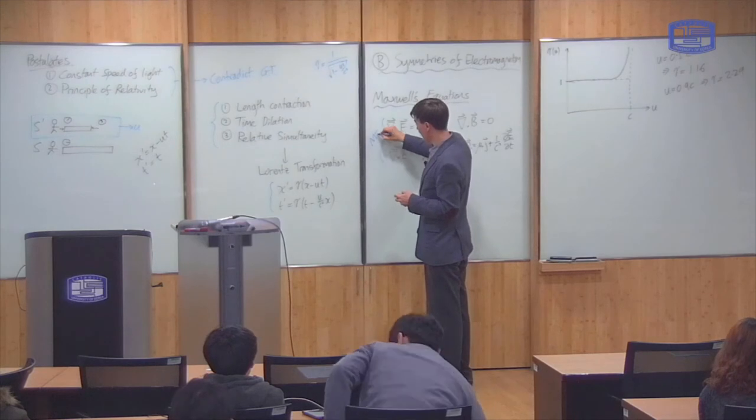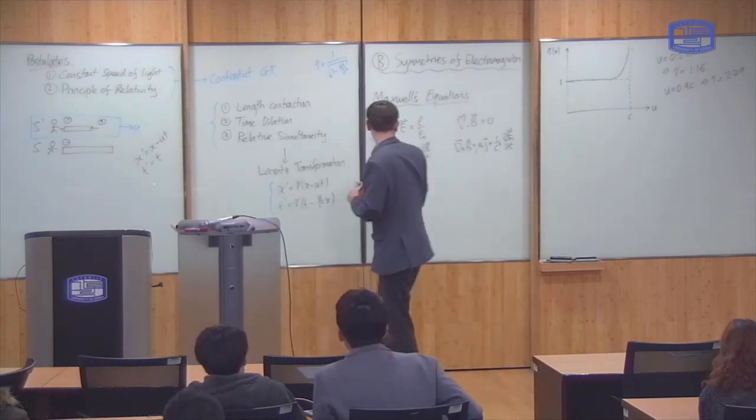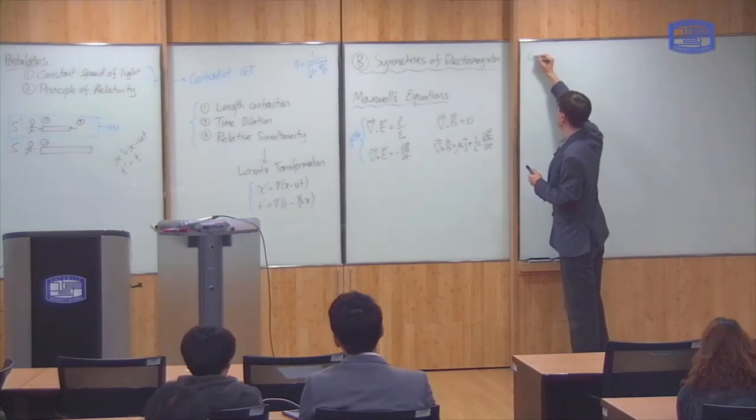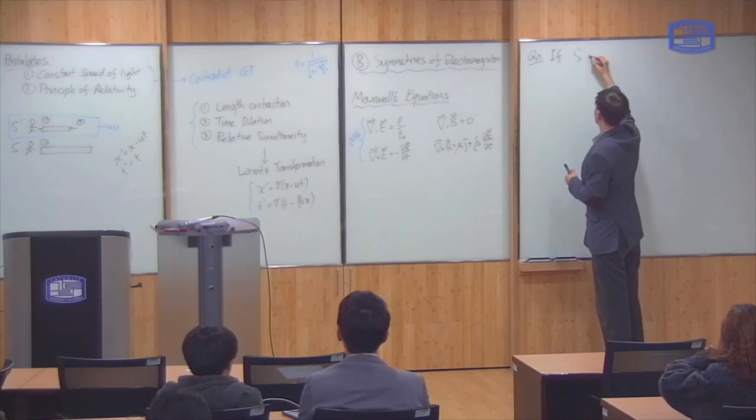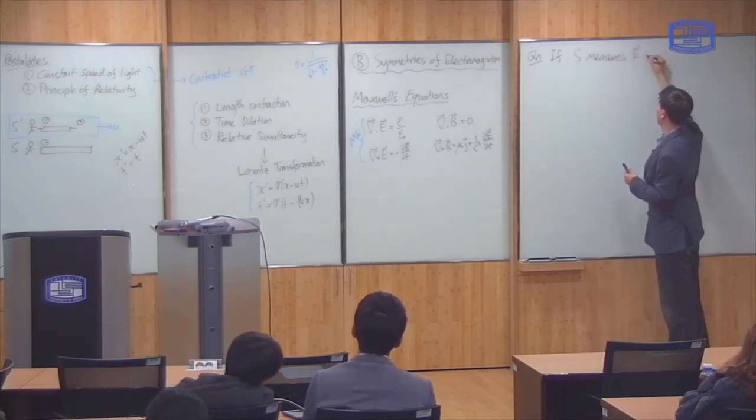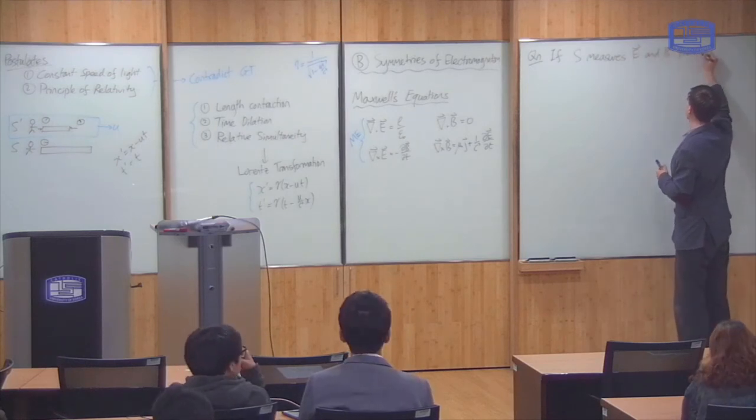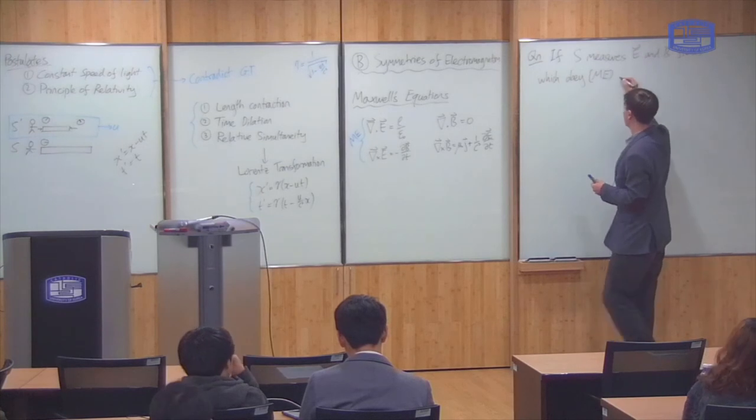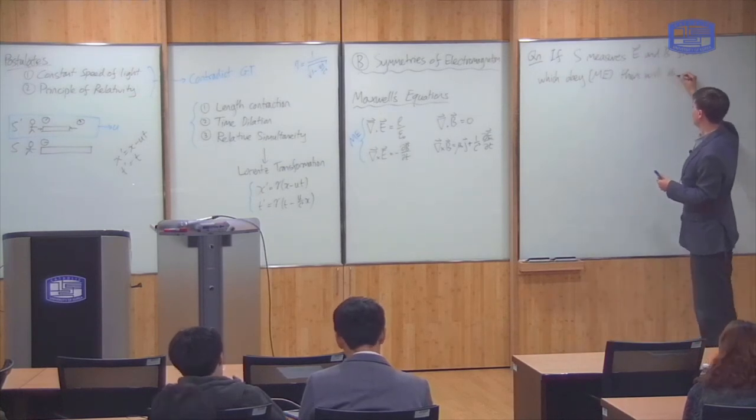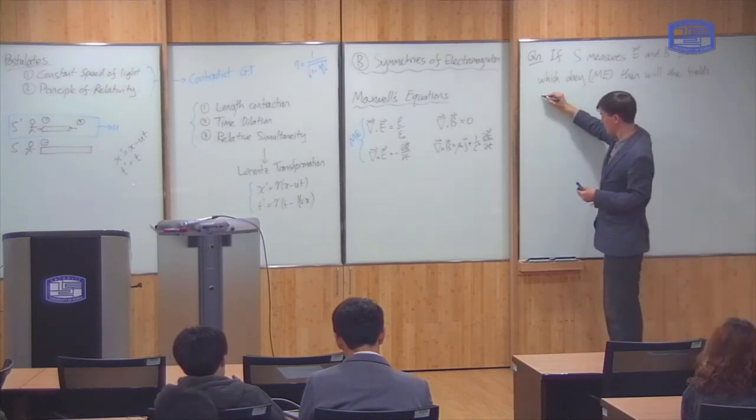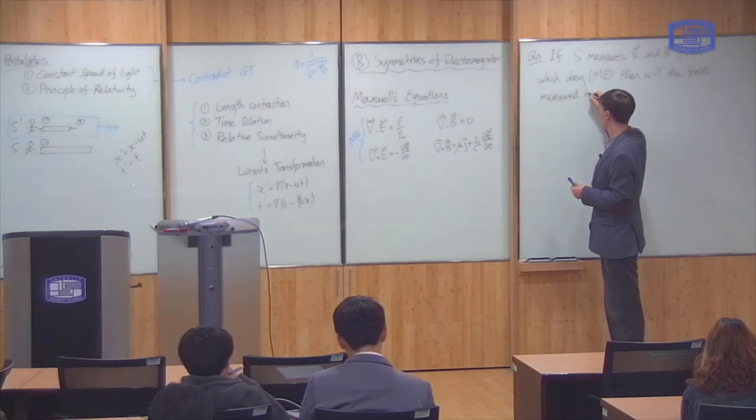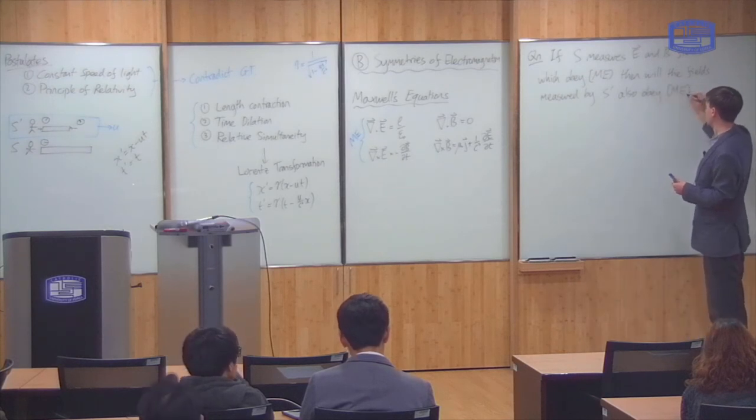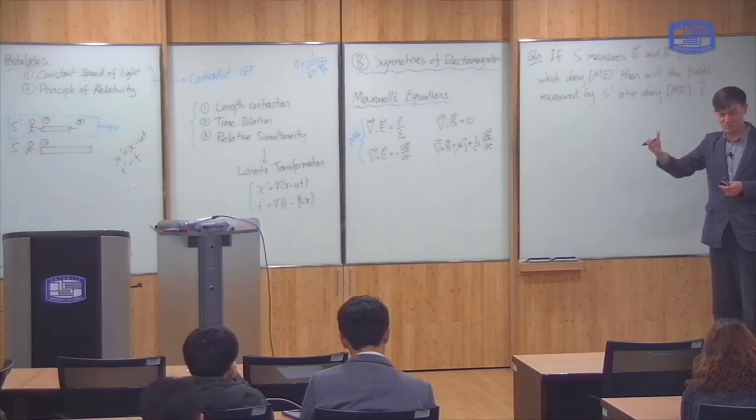So, let me call these ME, Maxwell equations. If S measures electric and magnetic fields which obey the Maxwell equations, then will the fields measured by S prime also obey Maxwell's equations? This is the question that Lorentz was considering from a theoretical perspective.